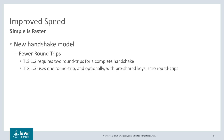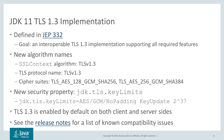Here are some details about the TLS 1.3 implementation in JDK 11. This feature was defined in JEP 332, and the goal of the JEP was to produce an interoperable TLS 1.3 implementation supporting all of the required features as per the RFC. The implementation does not support many of the optional features as specified in the RFC. However, many of those optional features are considered important and will hopefully be added in subsequent releases of the JDK.